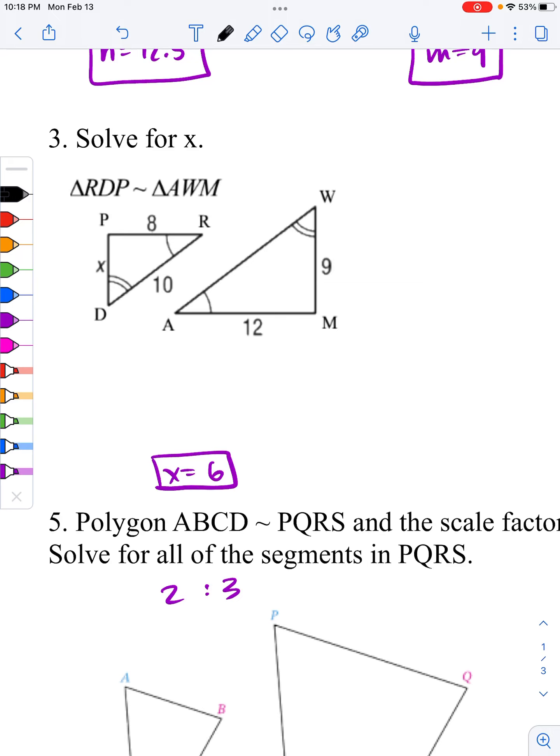Solve for x for 3. Now, this is a proportion problem. These are, in fact, similar to each other, as we see here. And if you notice, PR is given. P and R is given. And that should be corresponding to AM.